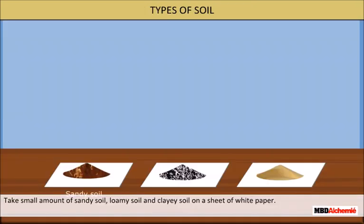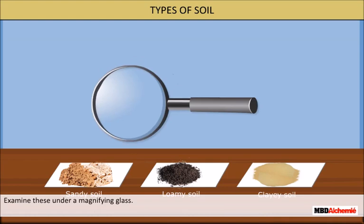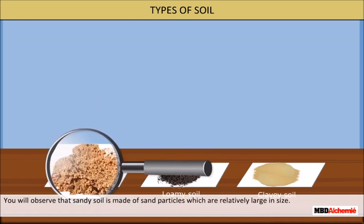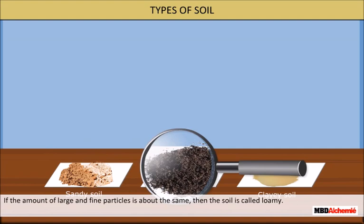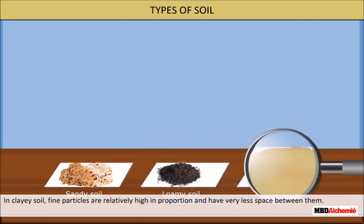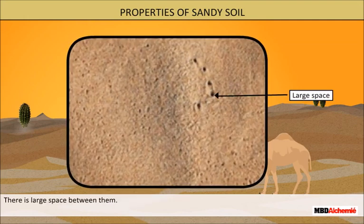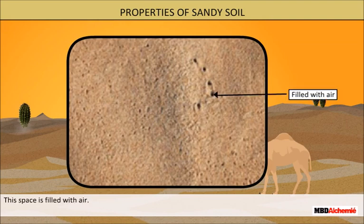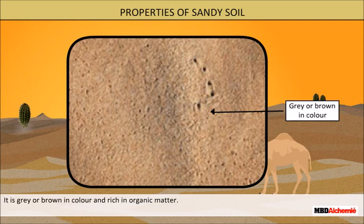Take small amounts of sandy soil, loamy soil and clay soil on a sheet of white paper. Examine these under a magnifying glass. You will observe that sandy soil is made of sand particles which are relatively large in size. They cannot fit closely together and there is large space between them, which is filled with air. If the amount of large and fine particles is about the same, then the soil is called loamy. Sandy soil is made of a greater proportion of big particles with large spaces between them filled with air. This soil is light, well aerated and dry. It is grey or brown in colour and rich in organic matter.